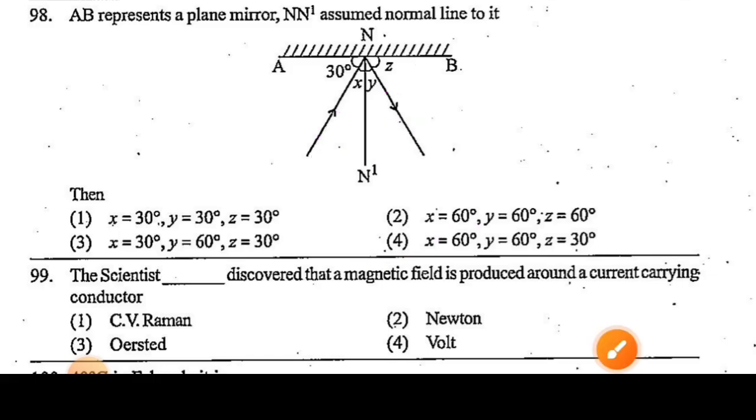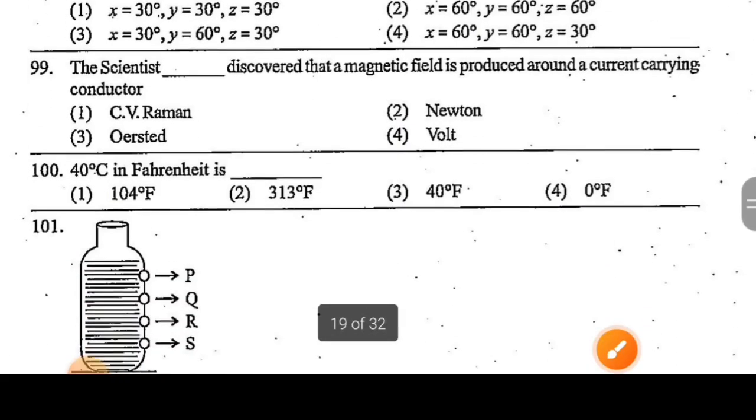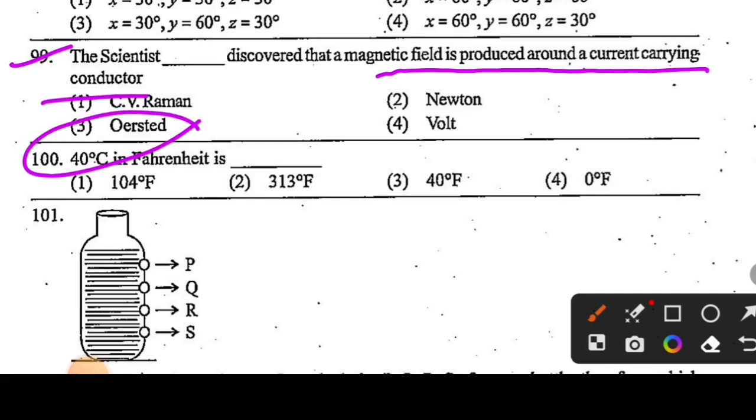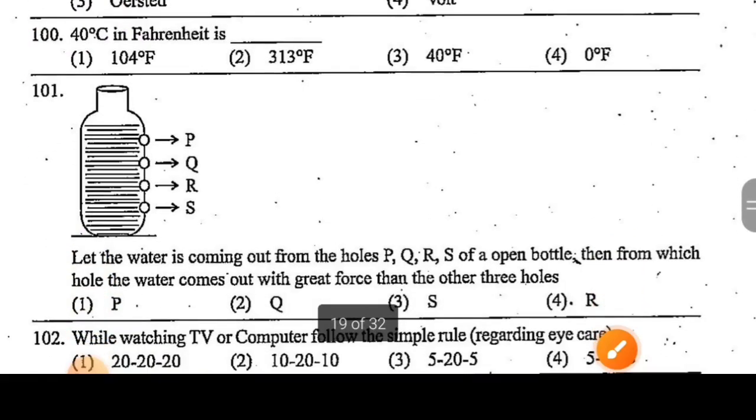Question 99: the scientist who discovered that a magnetic field is produced around a current carrying conductor. The scientist is Oersted. Option number 3 is correct here.